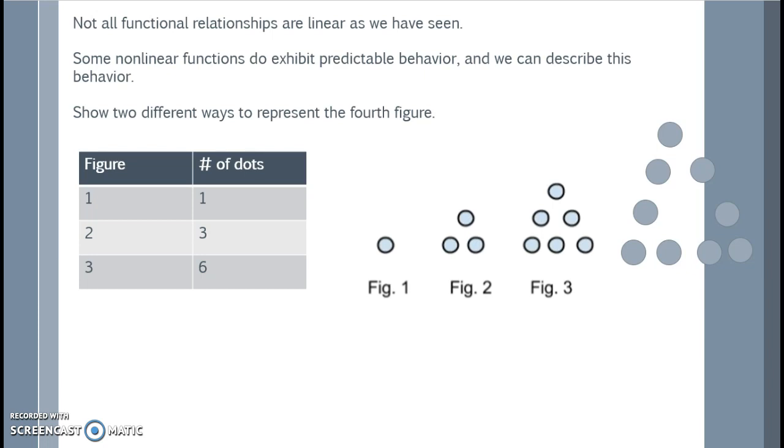So if I'm looking at the figure number, I count the number of dots, I see that I'm increasing each time by 3. So we could predict that the fifth figure will have 12 dots.